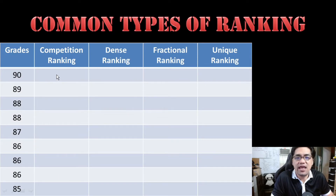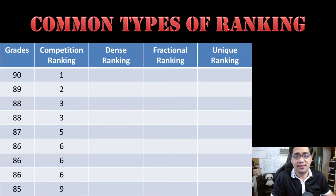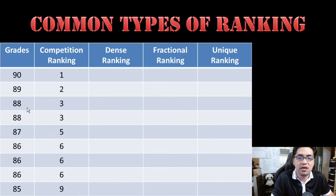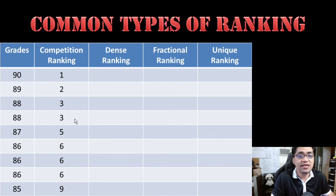On the screen right now you will find a chart that shows grades of students. Let's compare the different types of ranking and what kind of data they provide. First of all, we have what we know as standard competition ranking. You will see here the first placer which has a grade of 90 is number one. 89 is number two. For 88s, you will notice that these two 88s are a tie for third place, so you have two third places here. As for the next place, 87, you will notice that you have essentially skipped one rank because this will be the fifth place because there are four places above it even if the third placers are a tie.